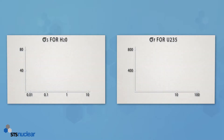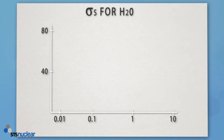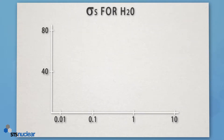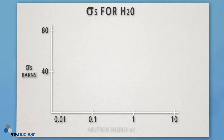What I'd like to do now is look at the cross-section for two different materials. I'm going to look at the scattering cross-section for light water, and the fission cross-section for uranium-235. Let's start with the scattering cross-section for light water. Here we've got the cross-section measured in barns as our y-axis, and the x-axis is our neutron energy in eV. And if I draw the shape of the curve on for us, it looks something like this, going out to high-energy neutrons.